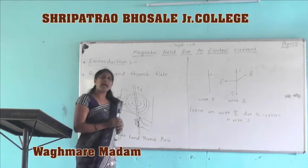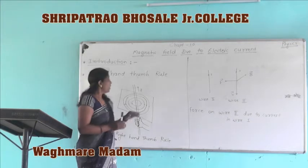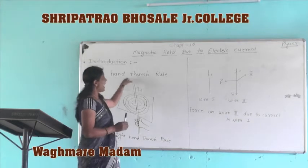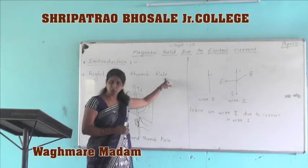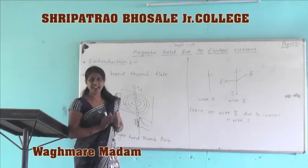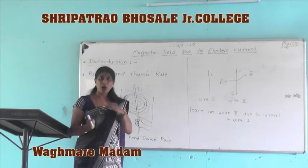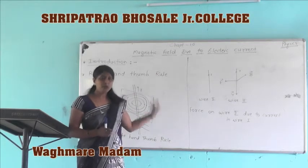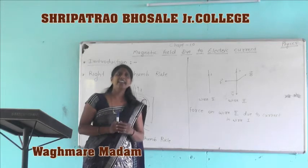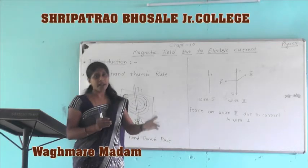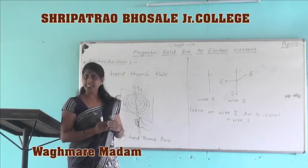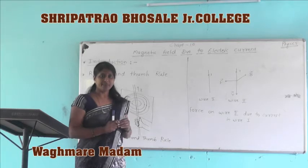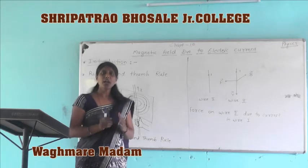The direction of the magnetic field produced due to the current-carrying conductor can be found by using the right-hand thumb rule. What does the right-hand thumb rule say, and how do we apply this rule?